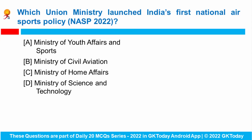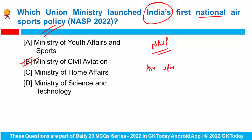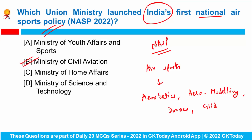Next question: Which union ministry launched India's very first National Air Sports Policy? The Union Ministry of Civil Aviation has announced the country's first National Air Sports Policy. This policy covers air sports such as aerobatics, aeromodelling, model rocketry, drones, ballooning, gliding, power gliding, hang gliding, parachuting, powered aircraft, and road aircraft. The Air Sports Federation of India (ASFI) is the apex governing body for this initiative. The answer is the Civil Aviation Ministry.